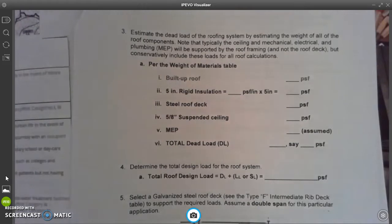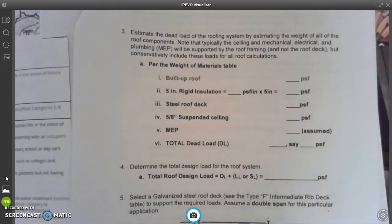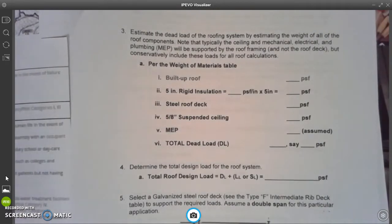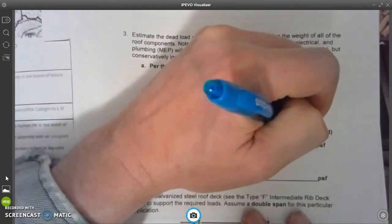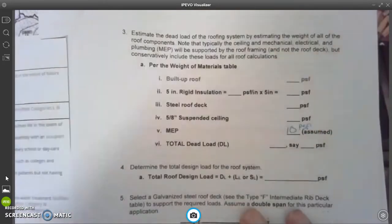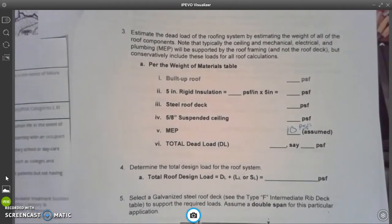Okay, now we're going to move on to question number 3, and it tells us that we have to estimate the dead load of the roofing system by estimating the weight of all the roof components. Note that typically the ceiling, mechanical, electrical, and plumbing MEP will be supported by the roof framing and not the roof deck, but we're going to conservatively include those loads for all roof calculations. I want you to also remember something earlier in the problem. It told us that MEP, they gave us a value of 10 PSF, and that is just assumed. So I'm going to put 10, and that's PSF, and that is just an assumed value right there.